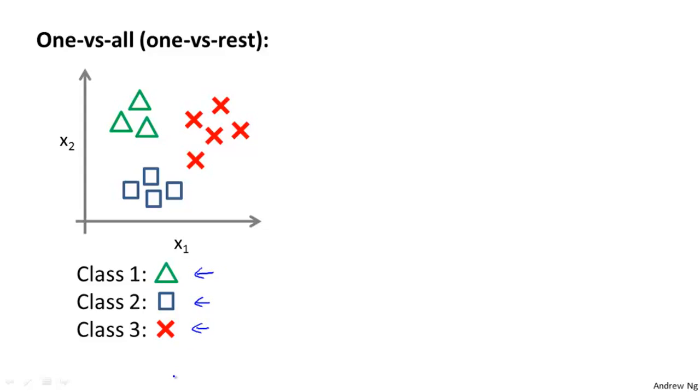What we're going to do is take our training set and turn this into three separate binary classification problems. So turn this into three separate two-class classification problems. So let's start with class 1, which is a triangle. We're going to essentially create a new sort of fake training set, where classes 2 and 3 get assigned to the negative class, and class 1 gets assigned to the positive class.